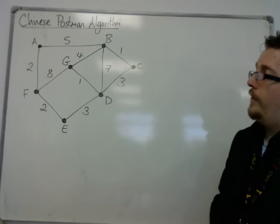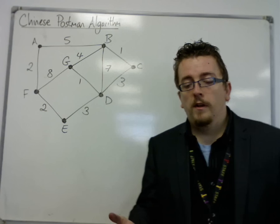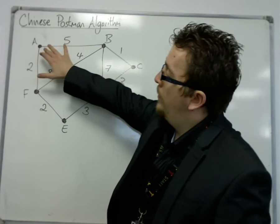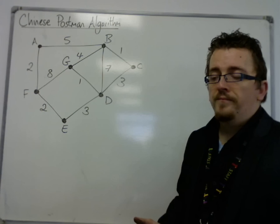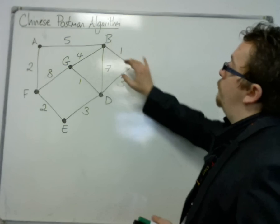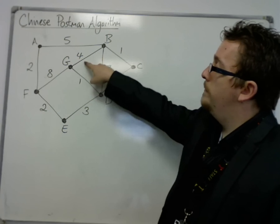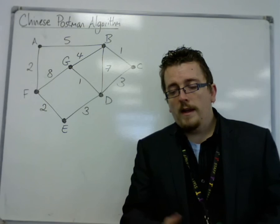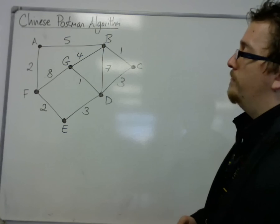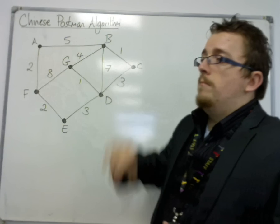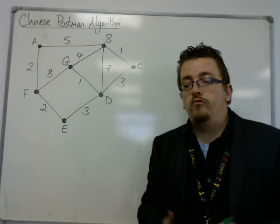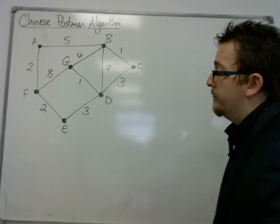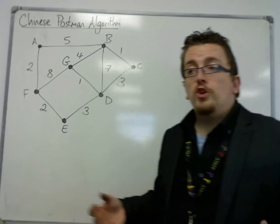What it concerns is: let's say we have a postman who must start at his or her depot, and let's say the depot is at A. They need to travel along each of these roads, which has a certain time attributed with it - maybe a time on the edges, or it could be a distance. What they want to do is minimise the amount of time they travel. They want to go along each road once; they don't want to repeat a road, so they want to do it in the least possible time and be as efficient as they possibly can.